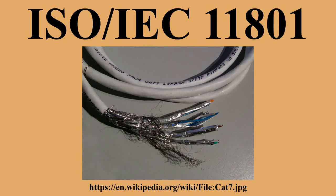OM-3: multimode fiber type, 50 micrometers core, minimum modal bandwidth of 2,000 MHz·km at 850 nanometers. OM-4: multimode fiber type, 50 micrometers core, minimum modal bandwidth of 4,700 MHz·km at 850 nanometers. OS-1: single-mode fiber type, 1 dB per kilometer attenuation. OS-2: single-mode fiber type, 0.4 dB per kilometer attenuation.